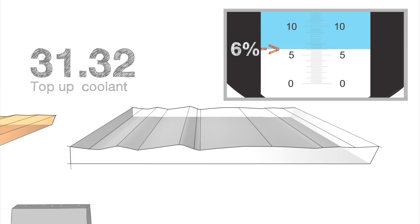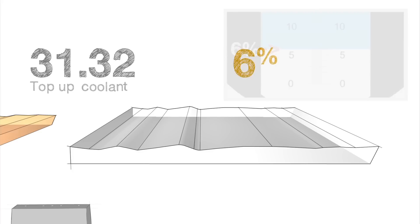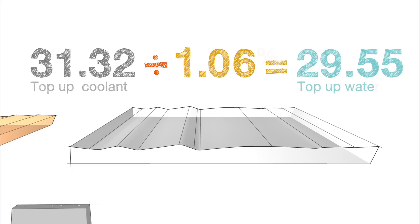The top-up coolant must also be mixed at a 6% concentration, so we change 6% to 0.06 and then add a 1 to it. We divide our adjusted top-up quantity of 31.32 by the 1.06 number and find that we need 29.55 gallons of water.